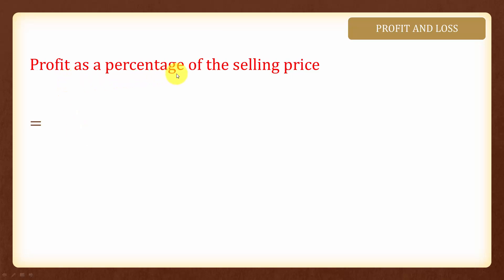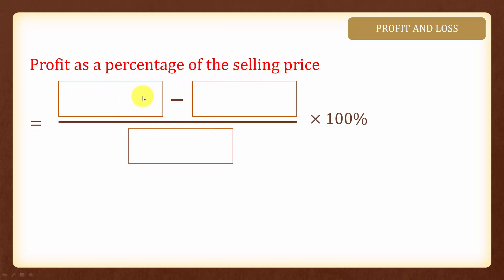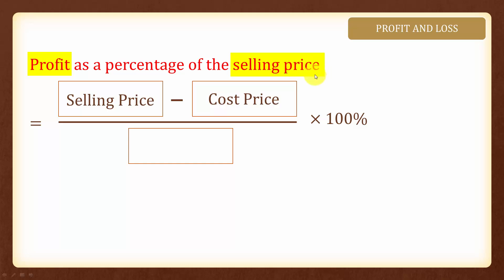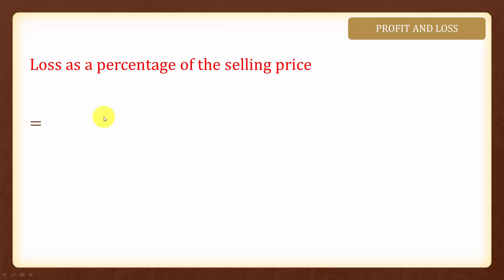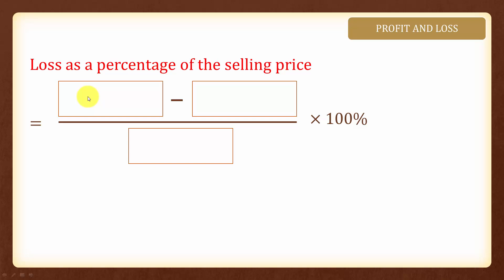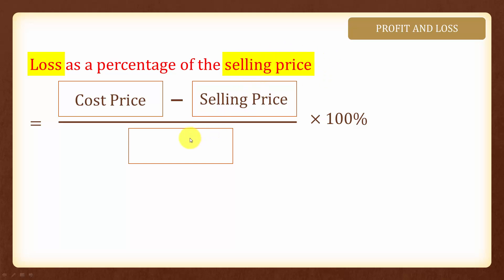For profit as a percentage of the selling price, we will have profit, which is selling price minus cost price, as a percentage of the selling price means it is over the selling price. Loss as a percentage of the selling price is equal to loss, which is cost price minus selling price, over the selling price, multiplied by 100%.